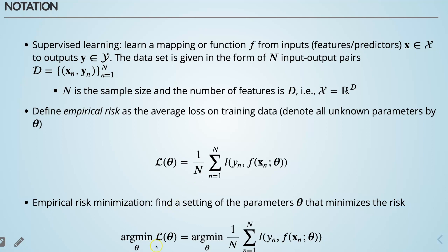Here we have argmin of L(theta) with respect to theta. The basic idea is that when we look at argmin, we are looking at the value of theta that minimizes this empirical risk. In other words, we are not looking at the minimum value of L(theta) — instead, we are looking at the optimizer, the value of theta that minimizes L(theta).